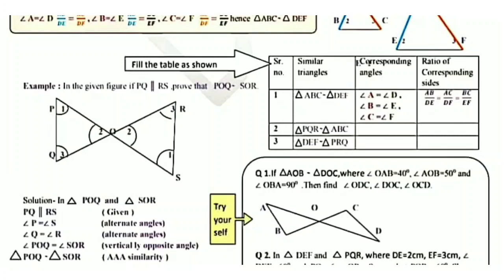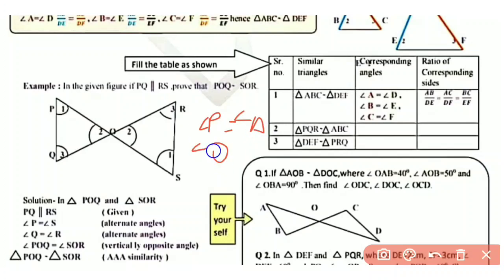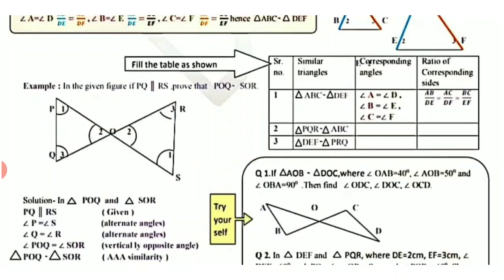For serial number 2, triangle PQR is similar to triangle ABC. The corresponding angles are: angle P equals angle A, angle Q equals angle B, angle R equals angle C. The corresponding sides ratio is PQ upon AB equals QR upon BC equals PR upon AC. For serial number 3, triangle DEF is similar to triangle PRQ. The corresponding angles are: angle D equals angle P, angle E equals angle R, angle F equals angle Q. The corresponding sides ratio is DE upon PR equals EF upon RQ equals DF upon PQ.